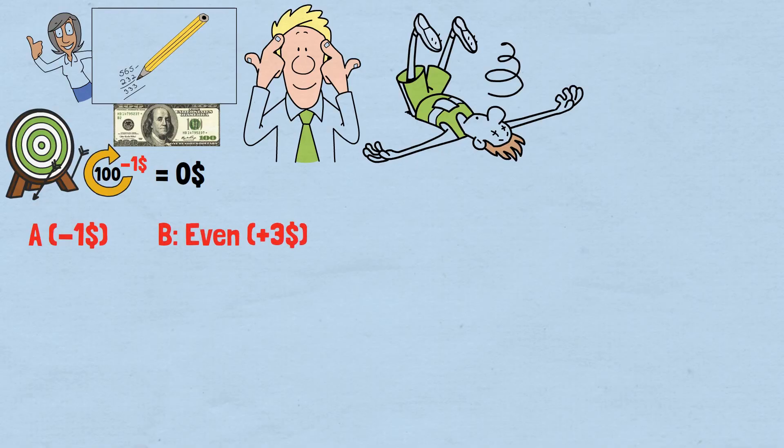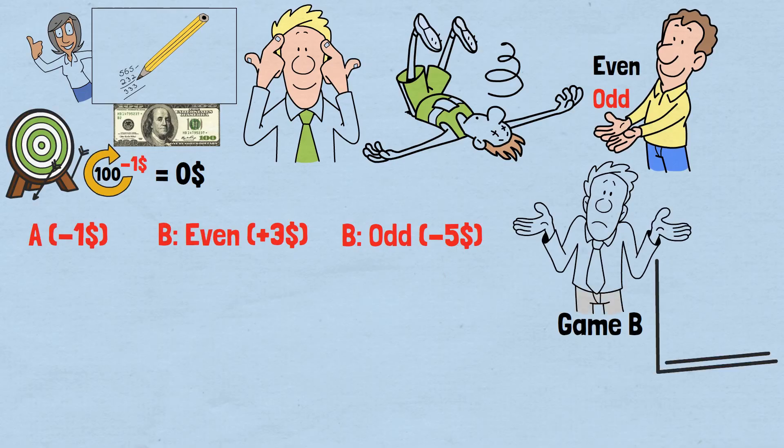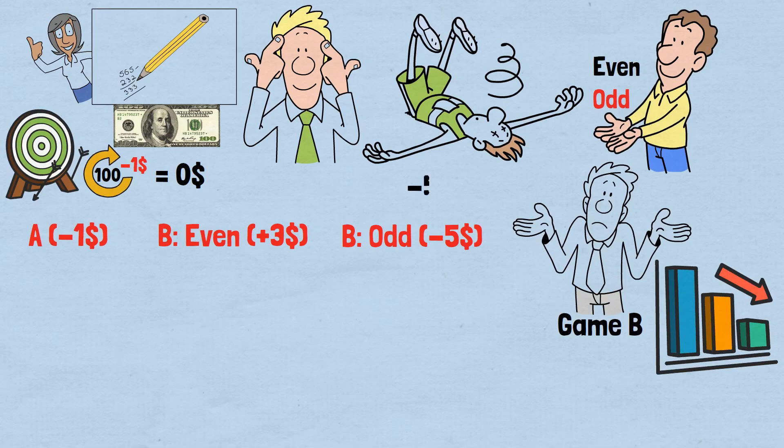Again, these are guaranteed outcomes based solely on whether your money is even or odd. Playing only Game B would be even worse than playing only Game A. You'd lose money faster because the penalty for having an odd amount—losing $5—is more severe than the reward for having an even amount—winning $3. But watch what happens when you alternate between these two losing games.